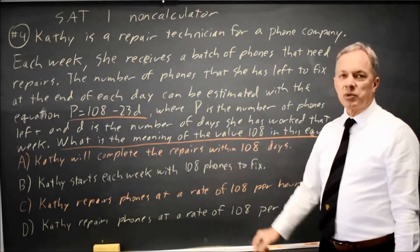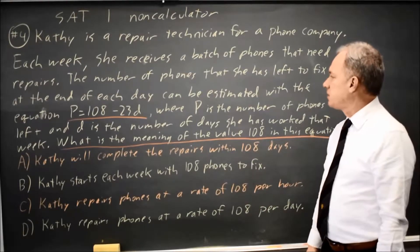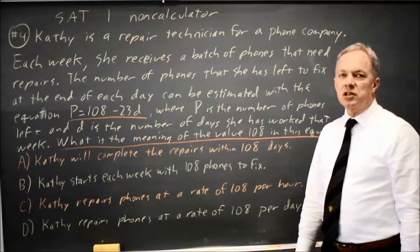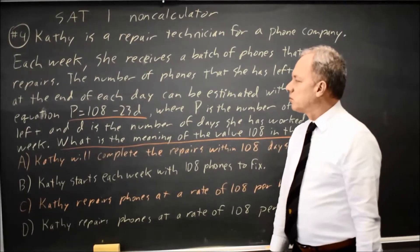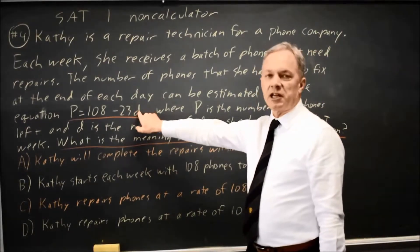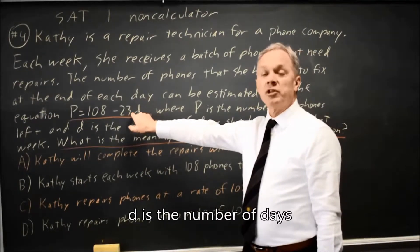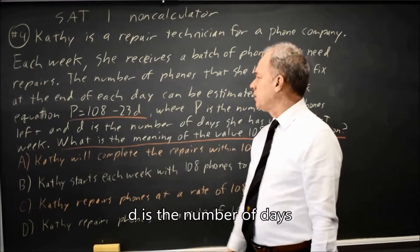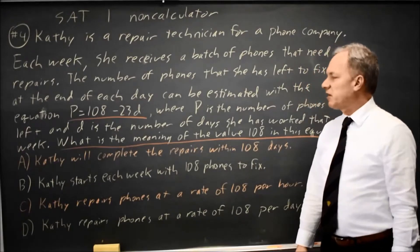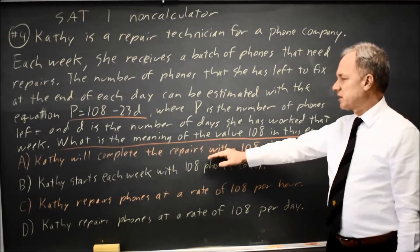Choice A, Kathy will complete the repairs in 108 days. This does not make sense for the equation or the word problem. If you put in 108 for D, you've got an extreme negative number for P, the number of phones left at the end of 108 days, so that would not make sense.